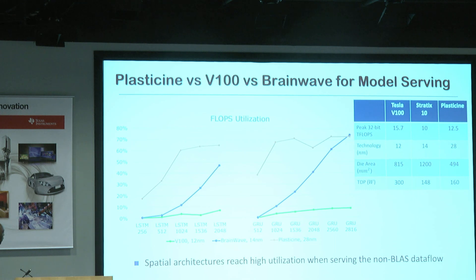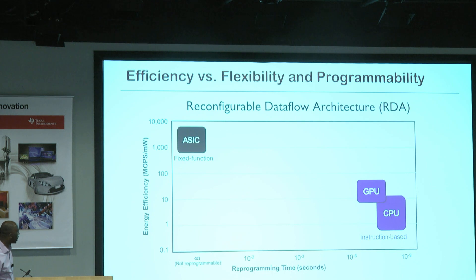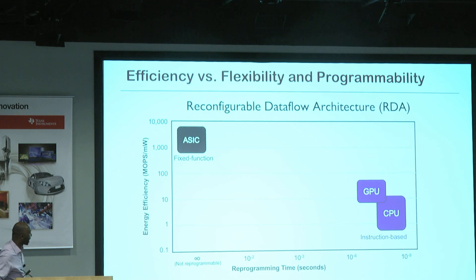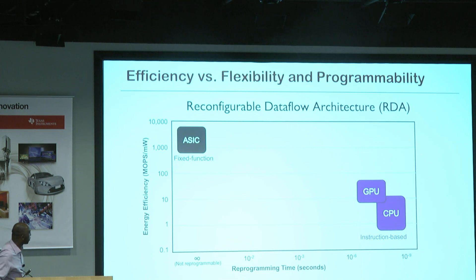The point here is that it's not just about flops, but about the efficiency with which you use the flops. ASICs are inflexible — they can't be reprogrammed — but you get very high efficiencies: 1,000 to 10,000 mega ops per milliwatt.